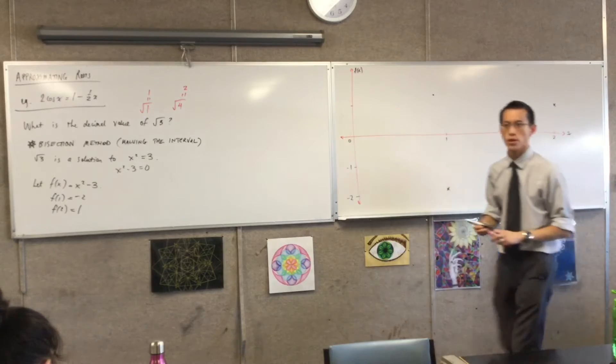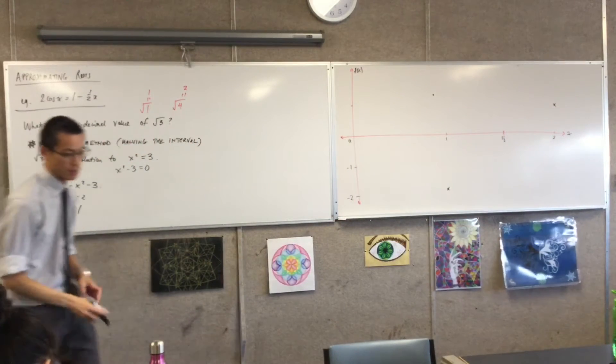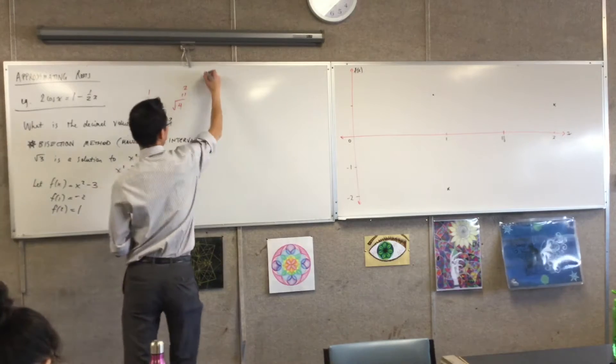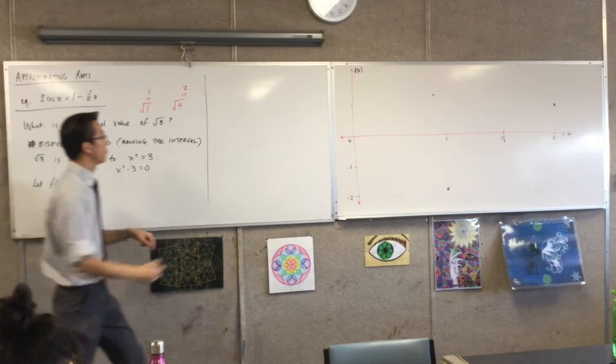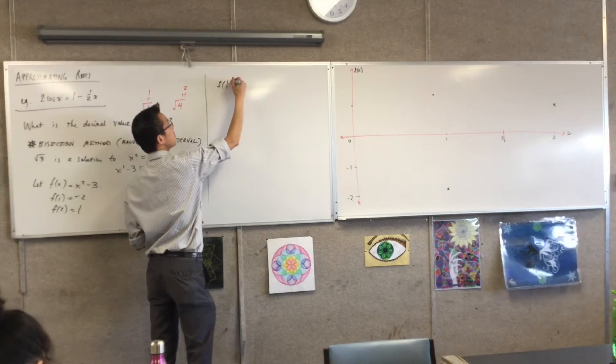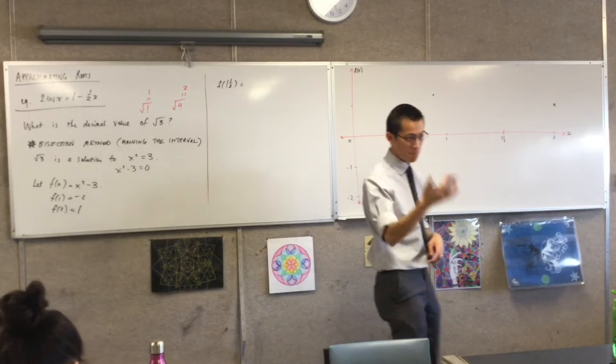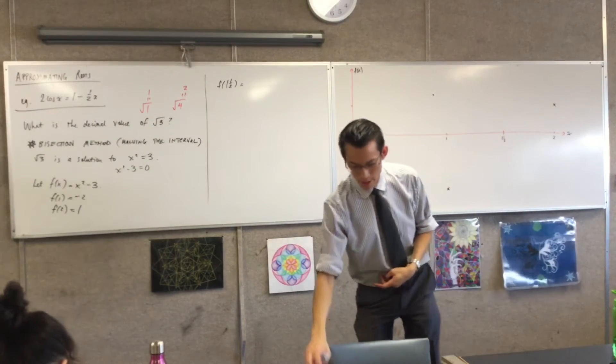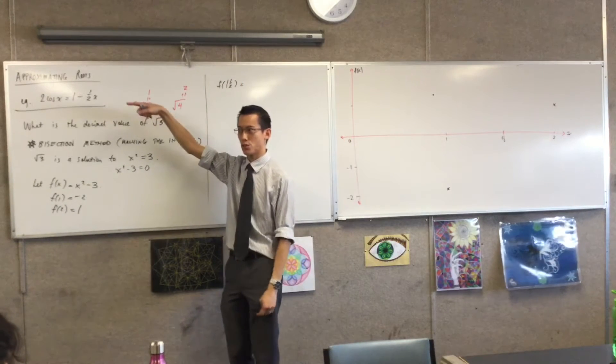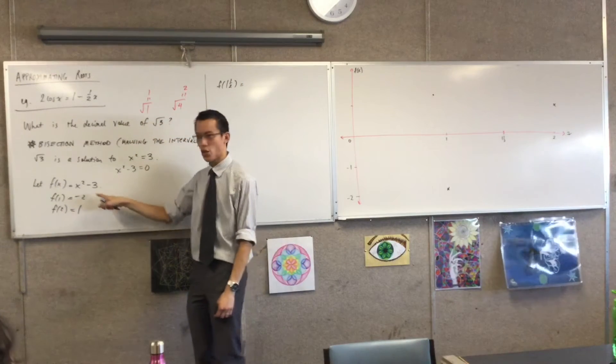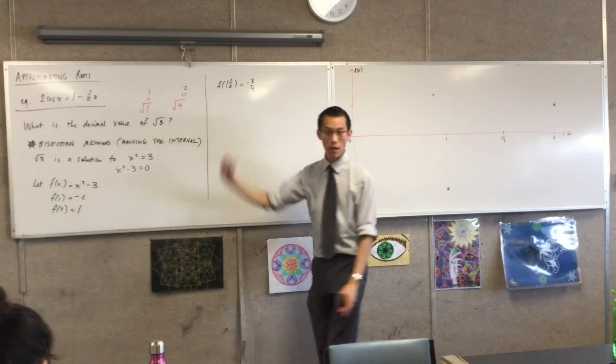If I now test again, right? And in fact, I'm literally going to write this test again. If I test again and see what this function is doing at 1.5, I'm going to get something that is either negative or positive. I've already done this one. 3 on 2 squared is 9 on 4, and then you take away 3, which I think is negative 3 quarters, I think.